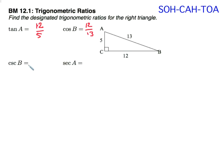Cosecant of B. Well, cosecant is the reciprocal of sine. So it's 1 over sine of B. So I want the reciprocal sine function. That's going to be the hypotenuse over the opposite.